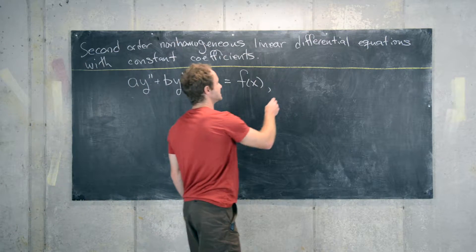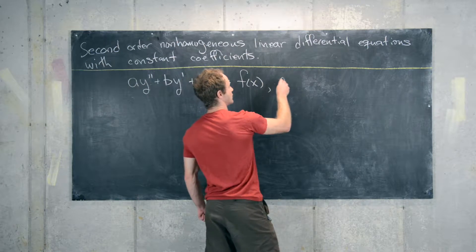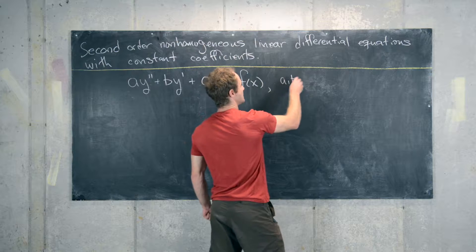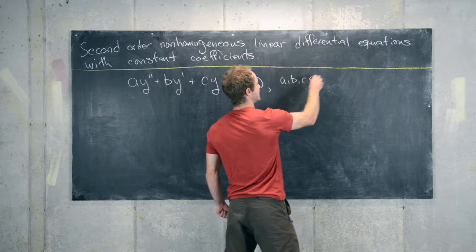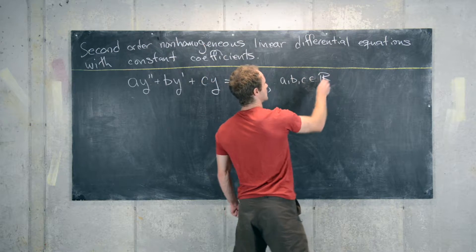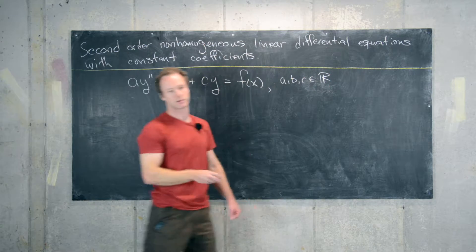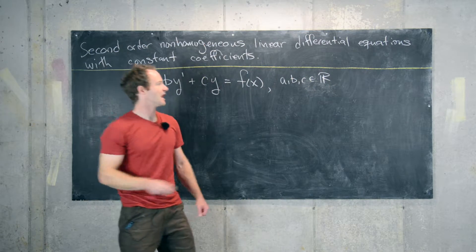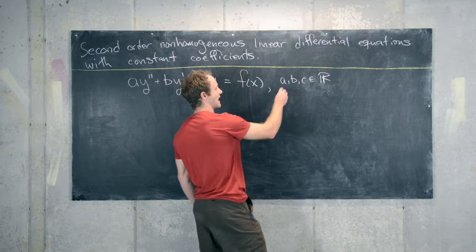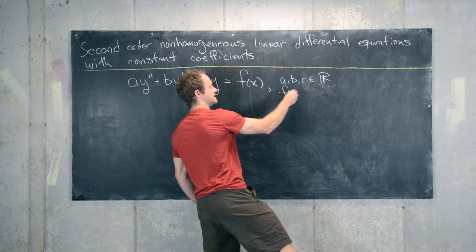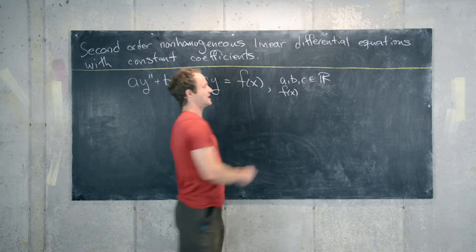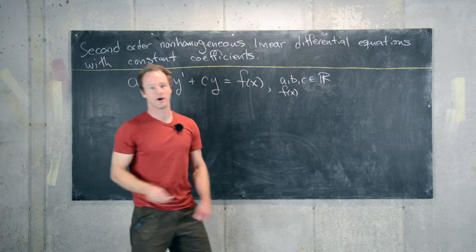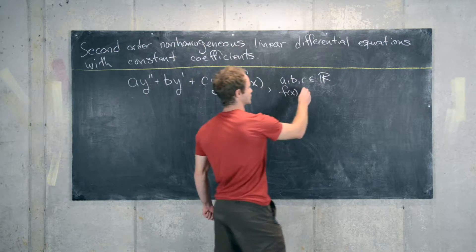In this setup, a, b, and c are real numbers. We also have f as some function, and this is called a forcing function.